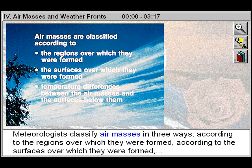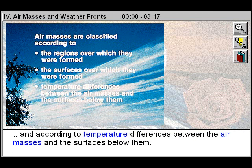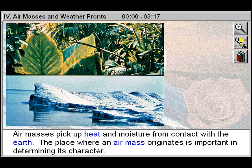Meteorologists classify air masses in three ways: according to the regions over which they were formed, according to the surfaces over which they were formed, and according to temperature differences between the air masses and the surfaces below them.